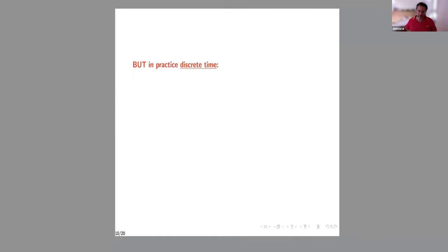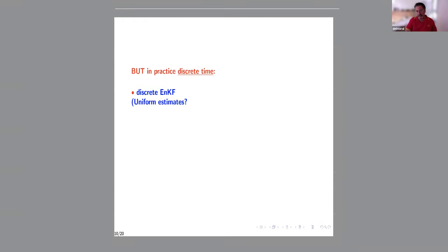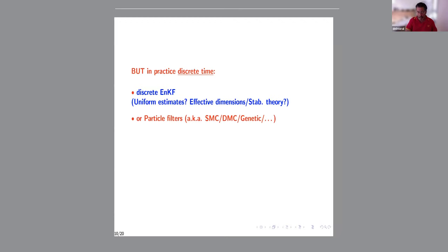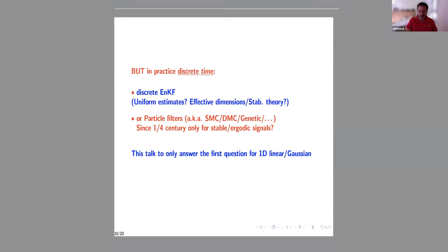In practice, everything needs to work in discrete time. For the discrete-time model, is there a uniform estimate as in continuous time? Is there a stability theory that can be developed? And even for particle filters — I don't know if the particle filter can track a transient signal. There has been a lot of work on these topics. One simple question I asked my new PhD student: take a one-dimensional filtering problem with a transient signal — can the particle filter track it?